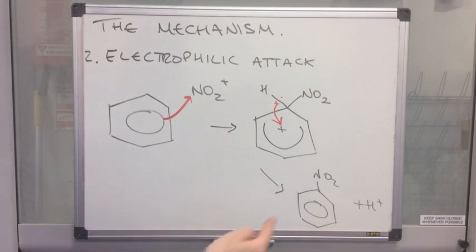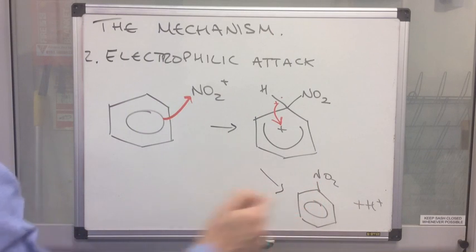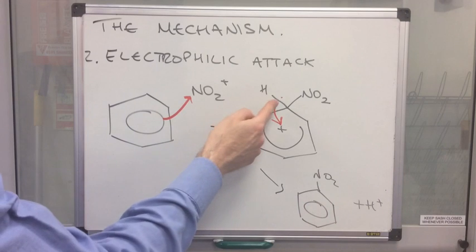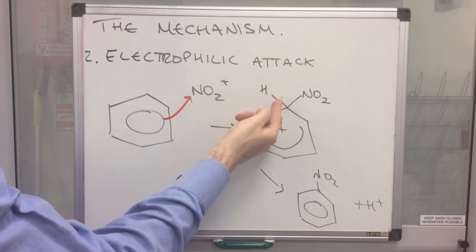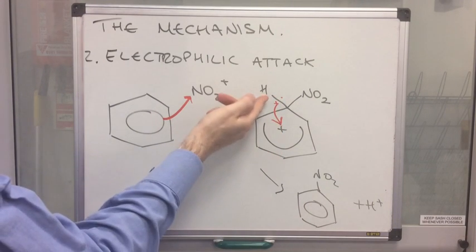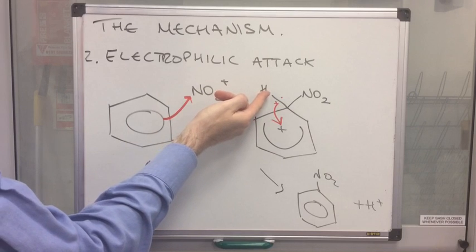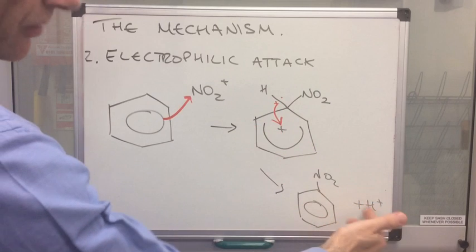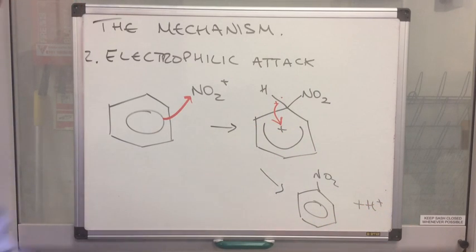So you can see there, bottom right hand corner, we have now reformed the pi electron cloud. So we've got all six electrons back in there. Now, because of this pair of electrons going back in, that effectively has sort of ejected this hydrogen from the ring. But it, because it doesn't have any electrons anymore, it is in the form of an H plus ion.